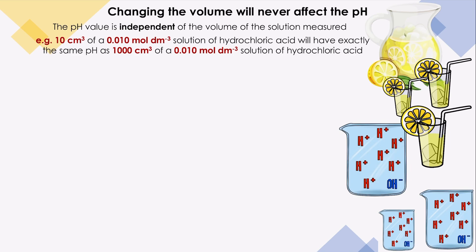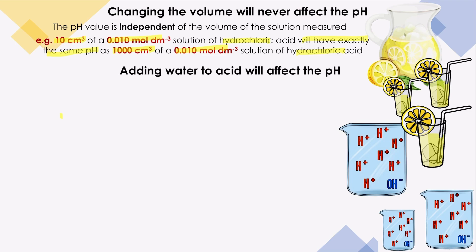Let's check a real example. If we have two solutions of hydrochloric acid — the difference between them is in the volume, but they have the same concentration — do you think they will have different pH? No, they will have exactly the same pH. They have different volumes, but as long as they have the same concentration of hydrogen ions, the pH will never be affected.